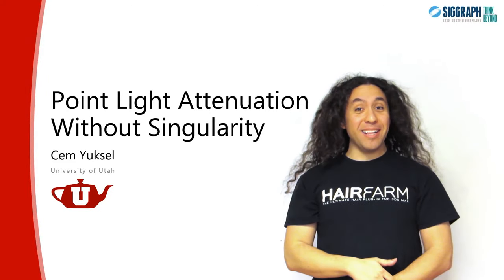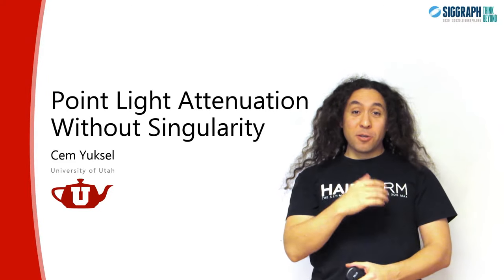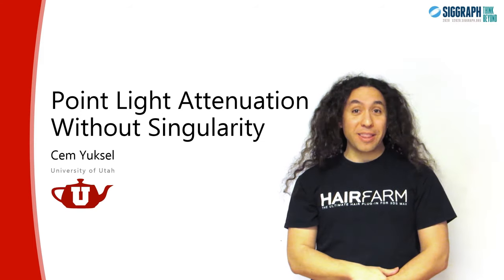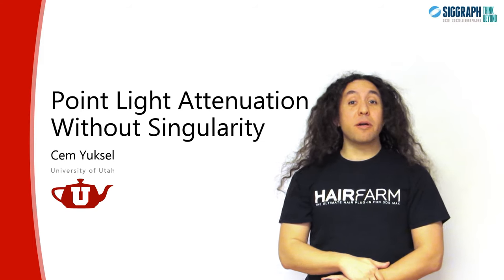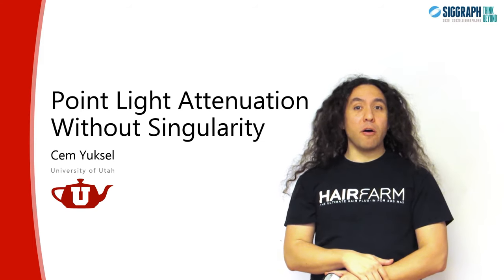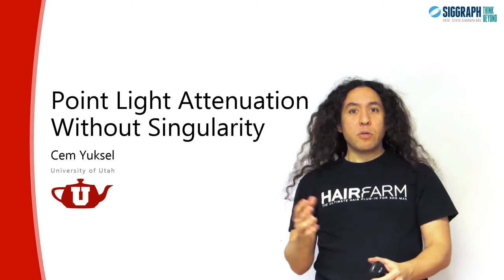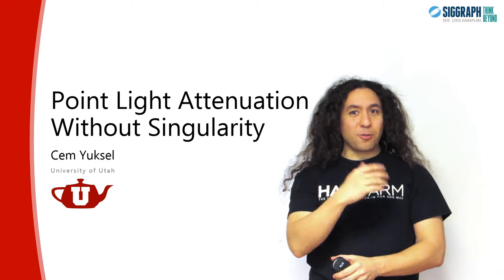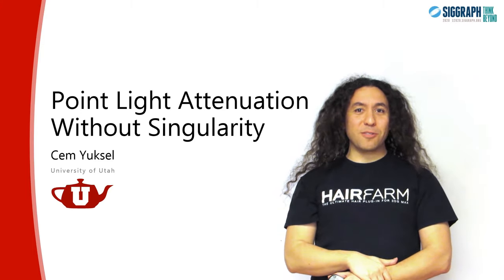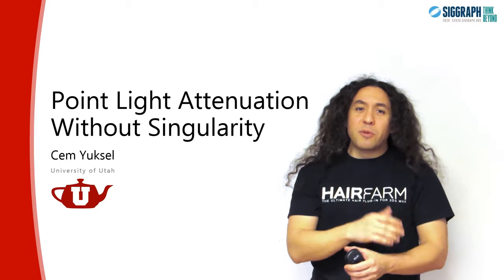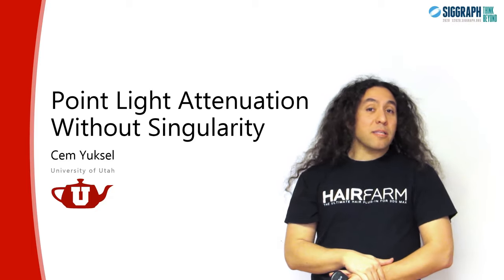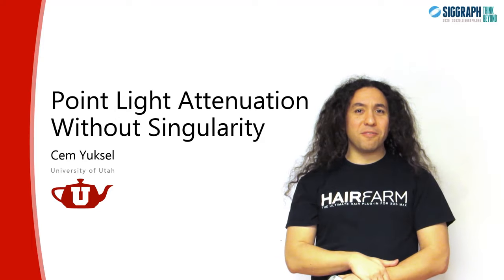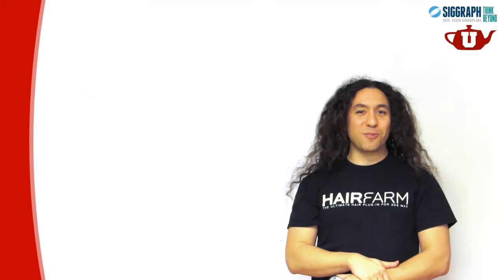Hi, my name is Jim Yuxell, and in this talk I'm going to present an alternative attenuation formulation for point lights that does not have the singularity problems of the inverse square attenuation function, which makes the light intensities go to infinity as you get closer and closer to a light source. I find this formulation rather practical and I just wanted to share it with the computer graphics world. I hope that you're going to find it practical as well.